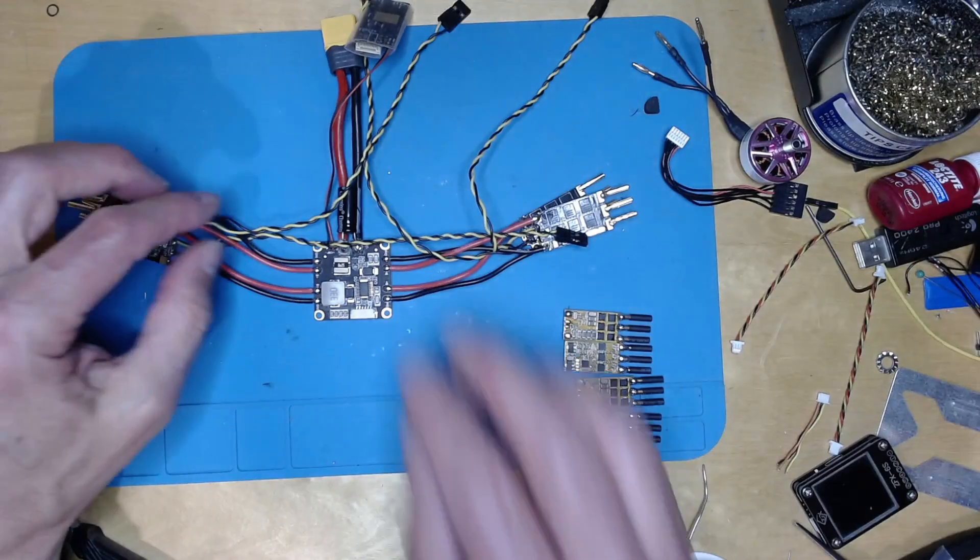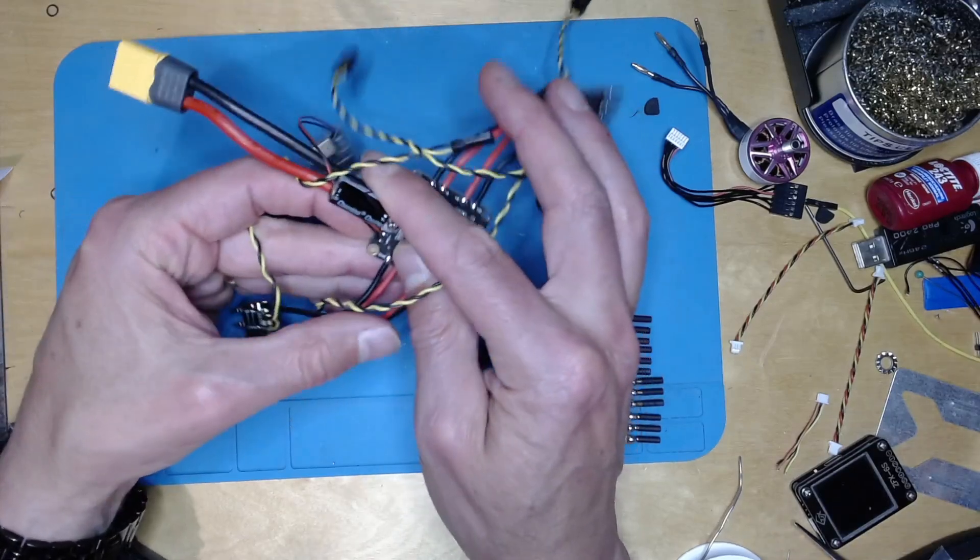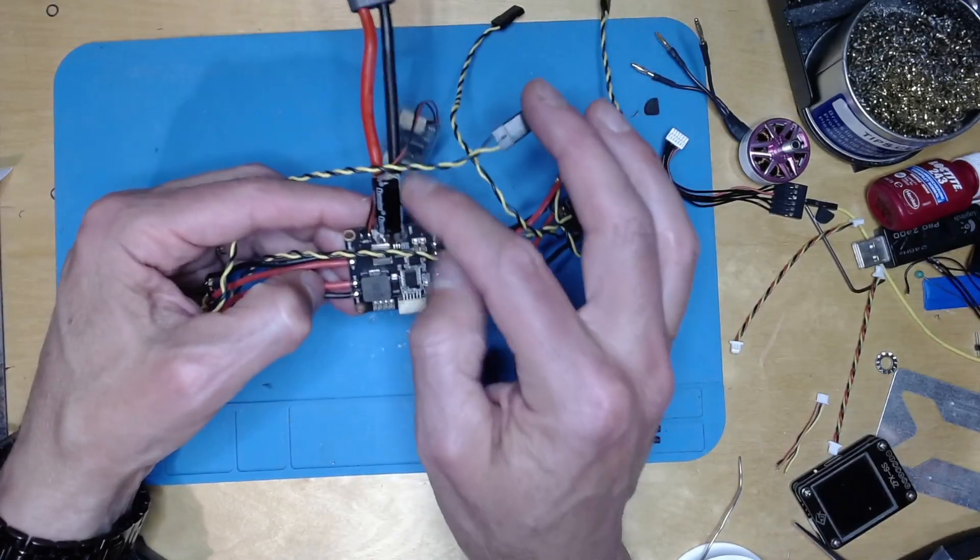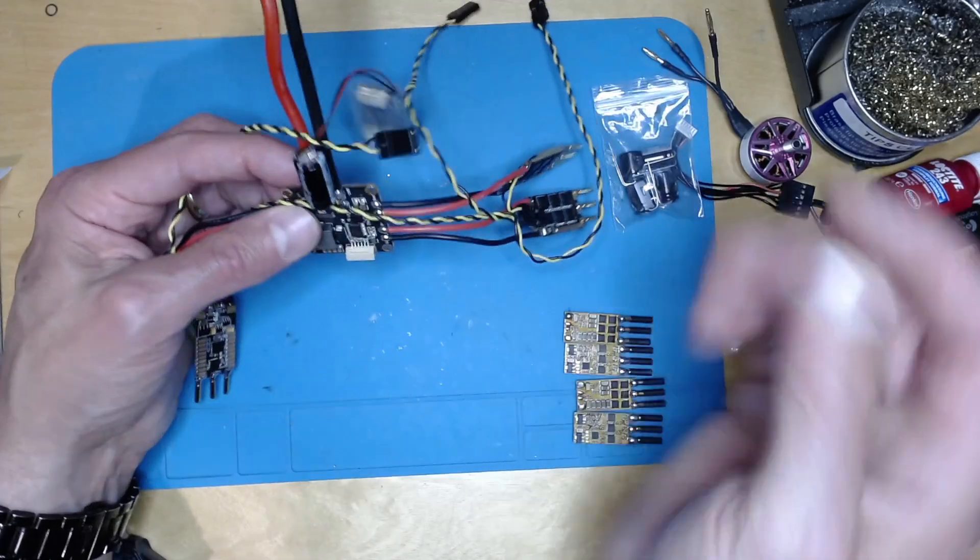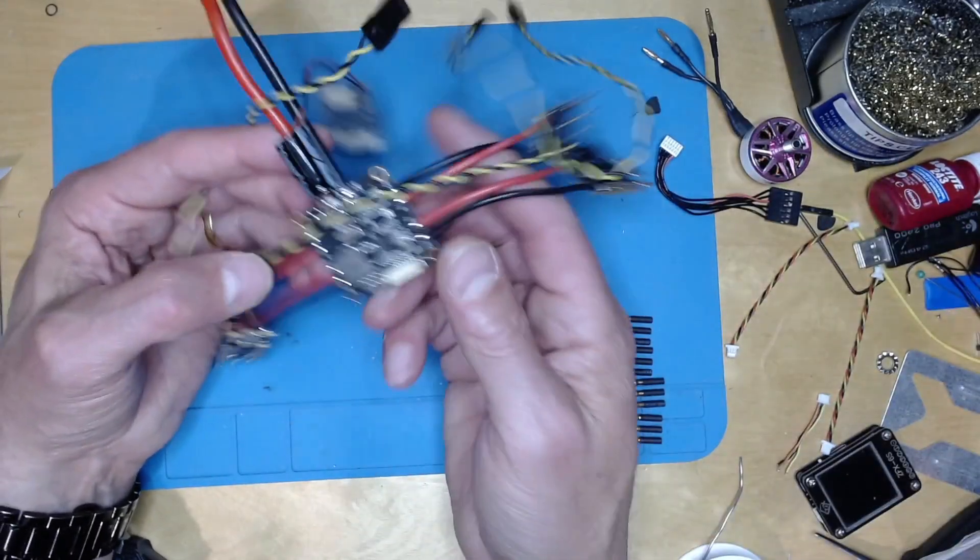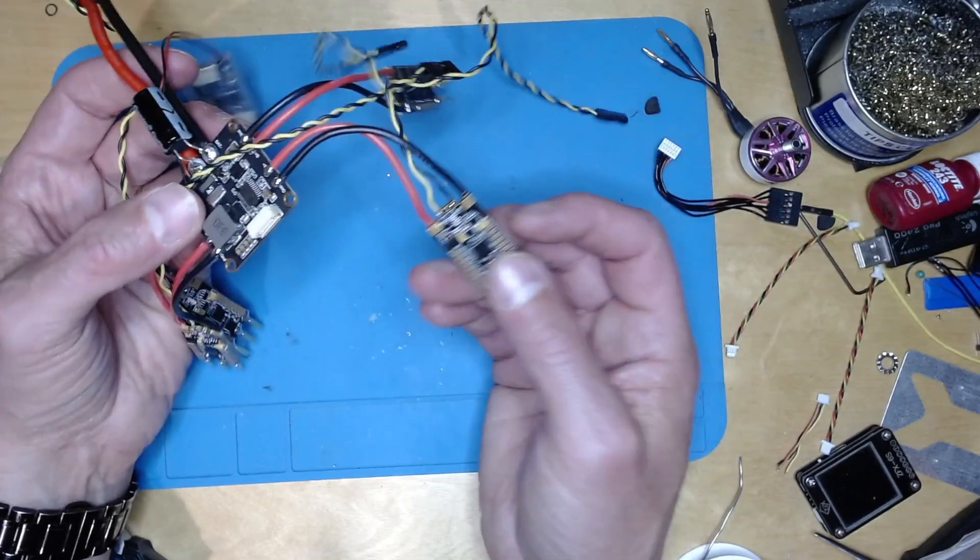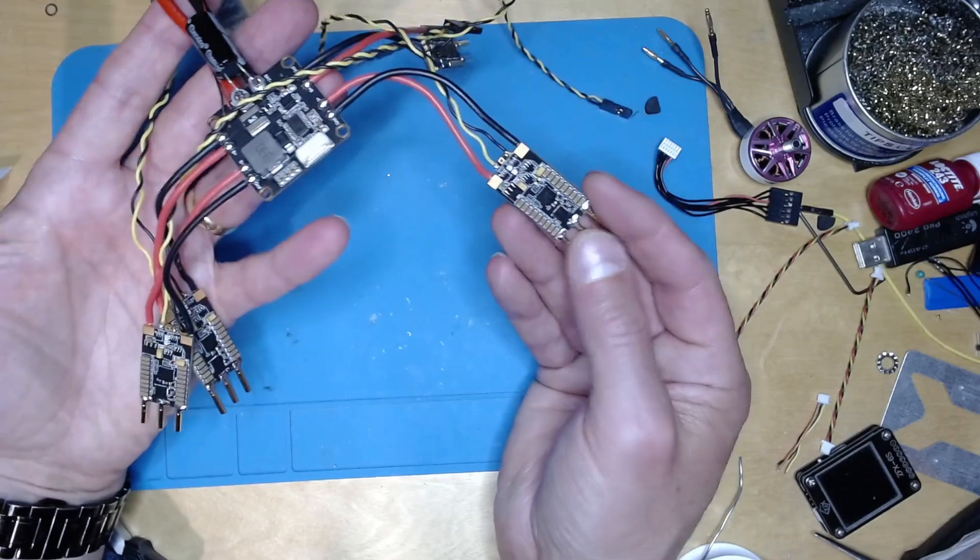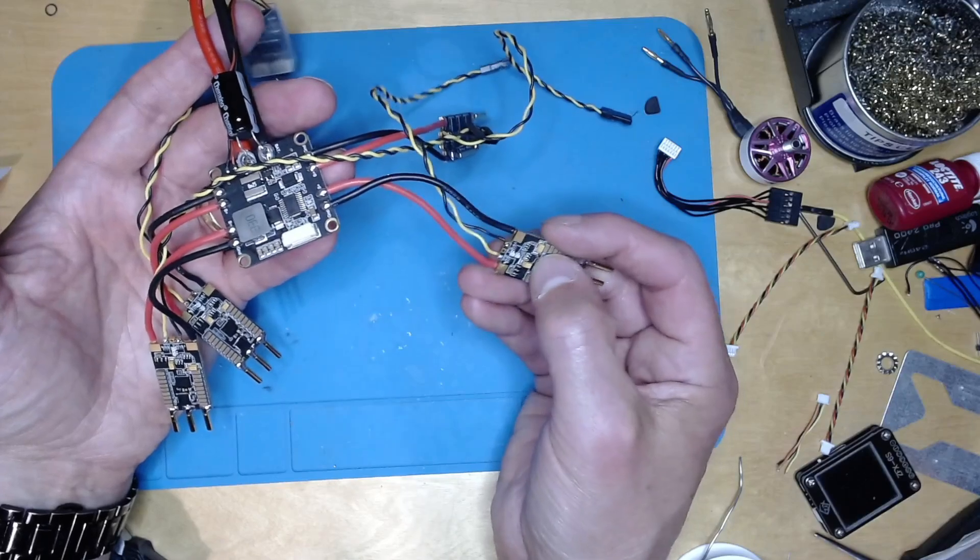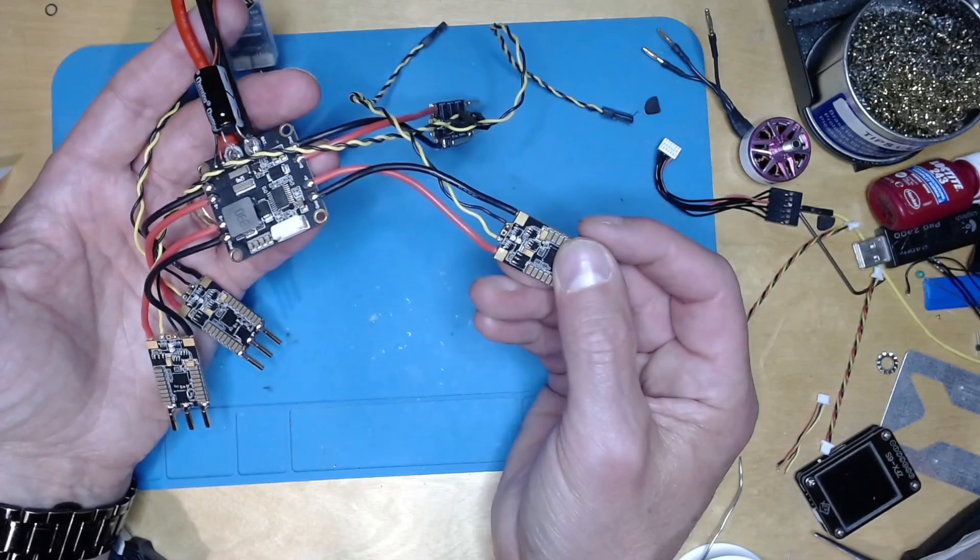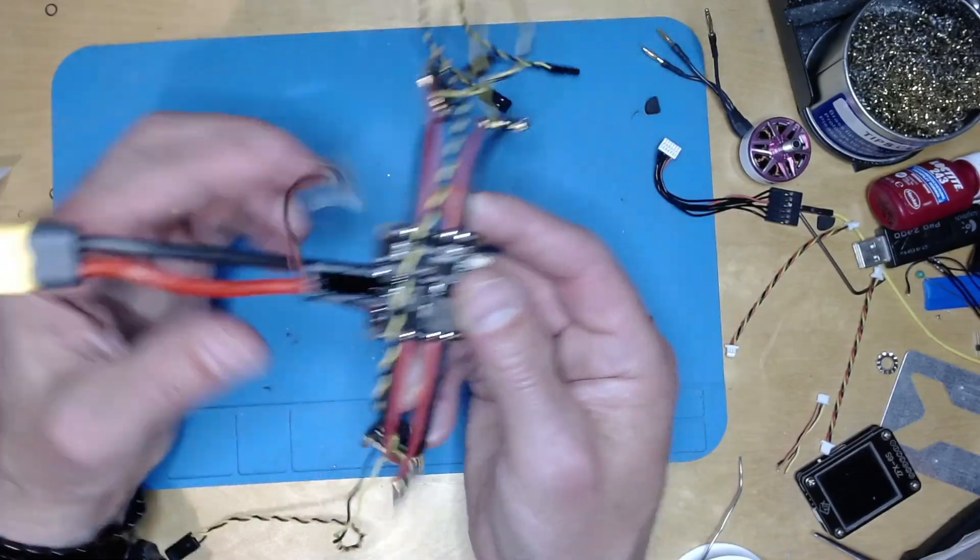All right, and there we are, done. So I elected to put a monster 1000 microfarad capacitor, 35 volts, here. These are 35 volts 330 microfarad, so 1000 is close to the same as four of them would be. I'll put the signal wires on. I'm not going to put heat shrink on this yet because I need to have access to these pads in order to flash the AM32 bootloader. But everything else looks good.